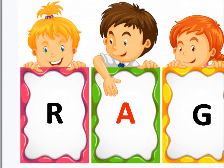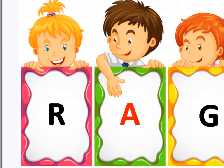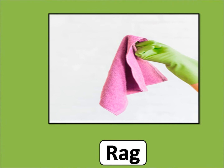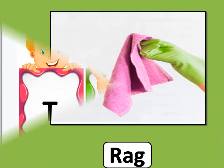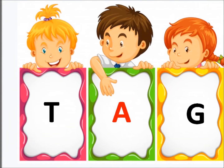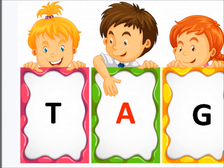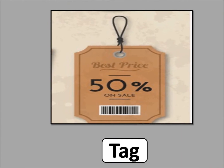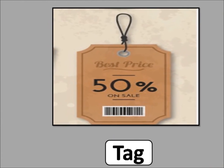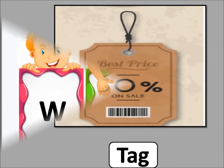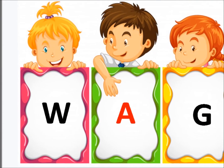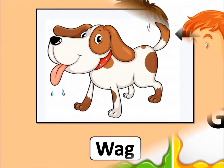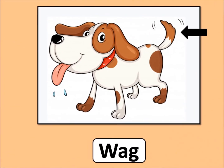R, A, G — R, Ag — Rag. T, A, G — T, Ag — Tag. W, A, G — W, Ag — Wag.